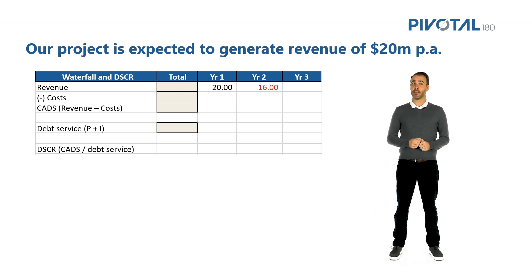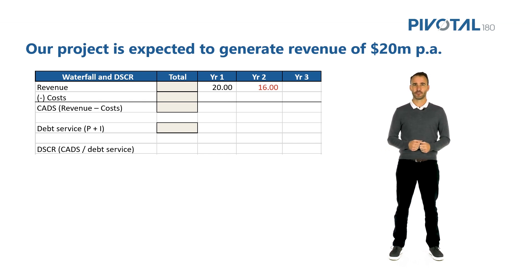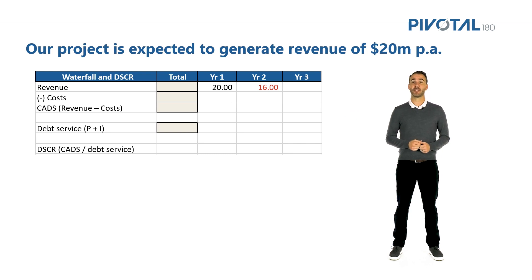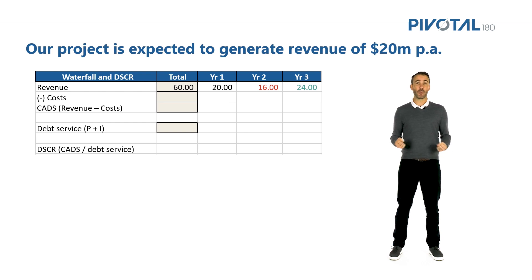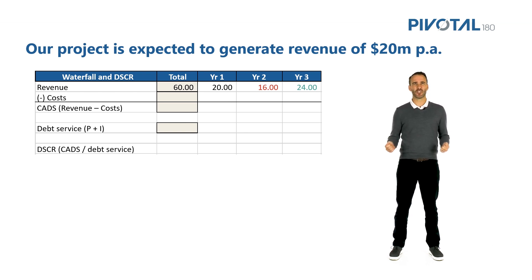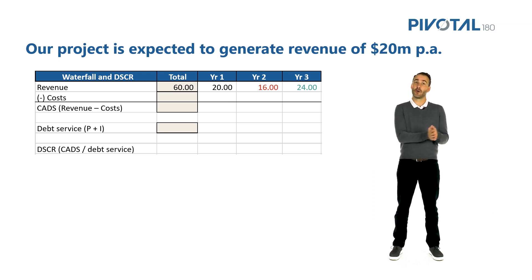This may be a fundamental problem with our project, but it could also just be a short-term challenge. In year three, we earn $24 million of revenue. So the average between year two and three is $20 million, still what we planned. It looks like maybe this was just a timing issue — in year three, we recovered the lost revenue from year two.